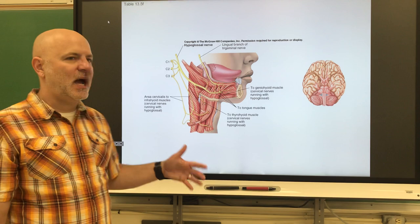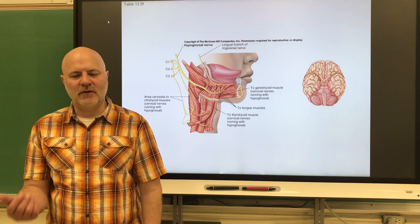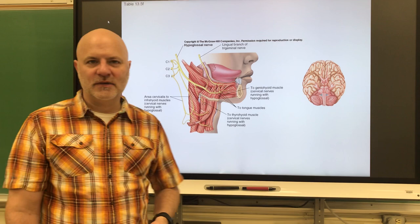Lastly is the hypoglossal nerve. 'Hypo' means below and 'glossal' means tongue, so it innervates below the tongue. It is motor for the tongue — used for whatever we use our tongue for.